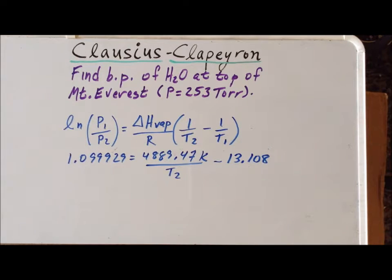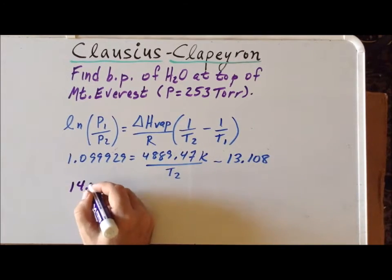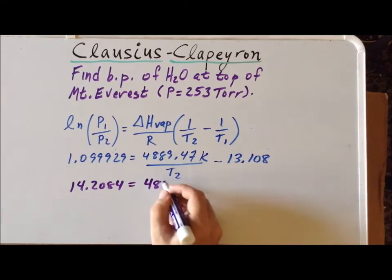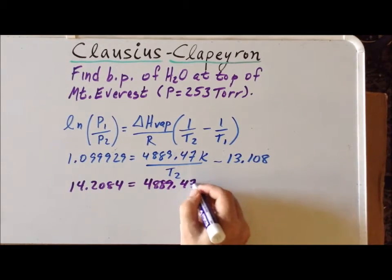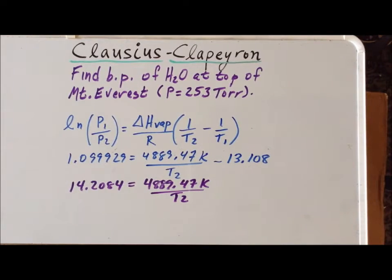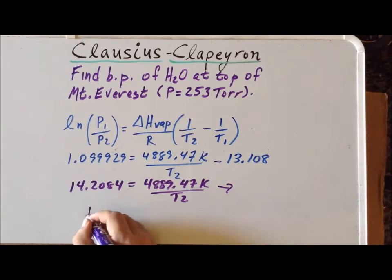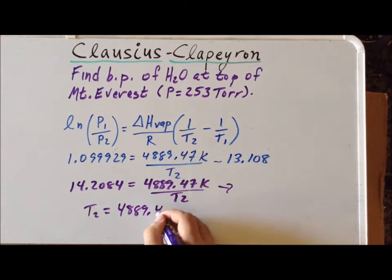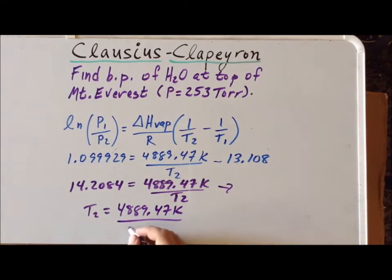Now we're going to add 13.108 to each side, and that gives us 14.2084 on the left-hand side, and the right-hand side still remains 4,889.47 Kelvin divided by T₂. Now I can multiply each side by T₂ and divide by 14.2084 in a single step to give us that T₂ is equal to 4,889.47 Kelvin divided by 14.2084.